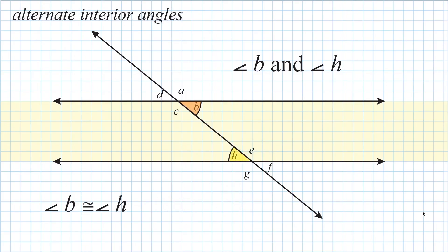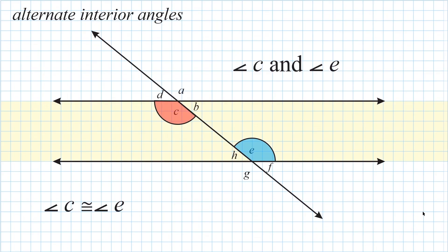If we look at angles B and H, they are on alternate sides of our transversal yet located inside the parallel lines in the interior region. So we identify angles B and H as alternate interior angles. Any pair of alternate interior angles will be congruent, so angles B and H have identical angle measures. Another set of alternate interior angles is angles C and E — both inside the parallel lines and on alternate sides of the transversal — making them alternate interior angles with identical angle measures.